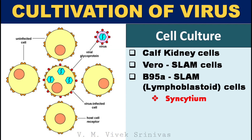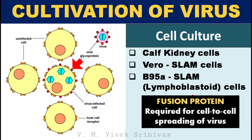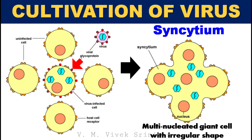Once the Rinderpest virus infects cells, the virus enters the host by fusing its viral envelope with the cell membrane. During fusion, viral proteins like hemagglutinin and fusion proteins get integrated into the cell membrane. This integrated fusion protein over the infected cell causes the infected cell to fuse with nearby neighboring cells, which is required for cell-to-cell spreading of the virus. After fusion with neighboring cells, this appears as an irregular-shaped, multinucleated giant cell — a cytopathogenic characteristic termed syncytium.